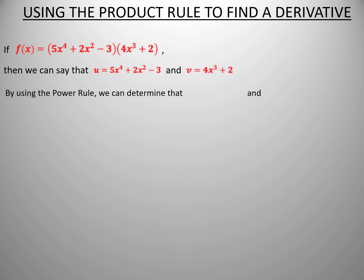By using the power rule, we can determine that u prime equals 20x cubed plus 4x and v prime equals 12x squared.